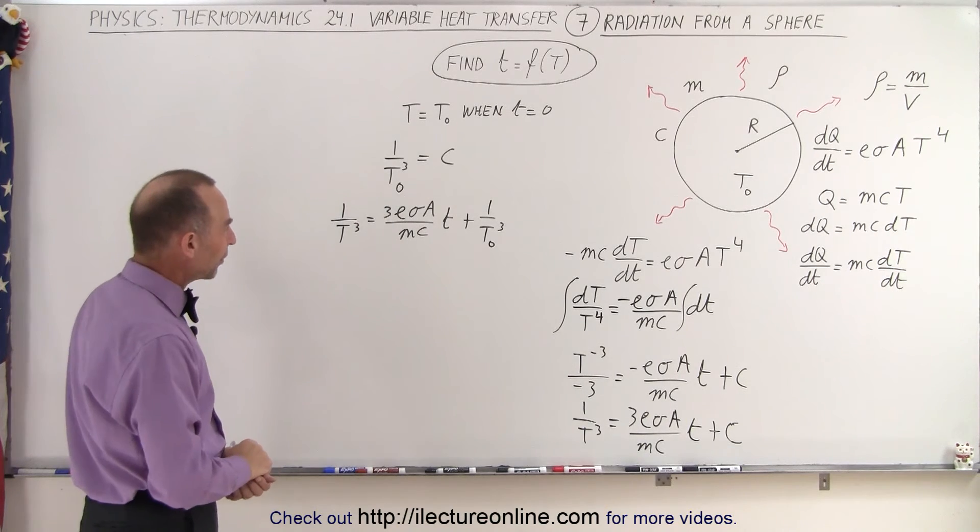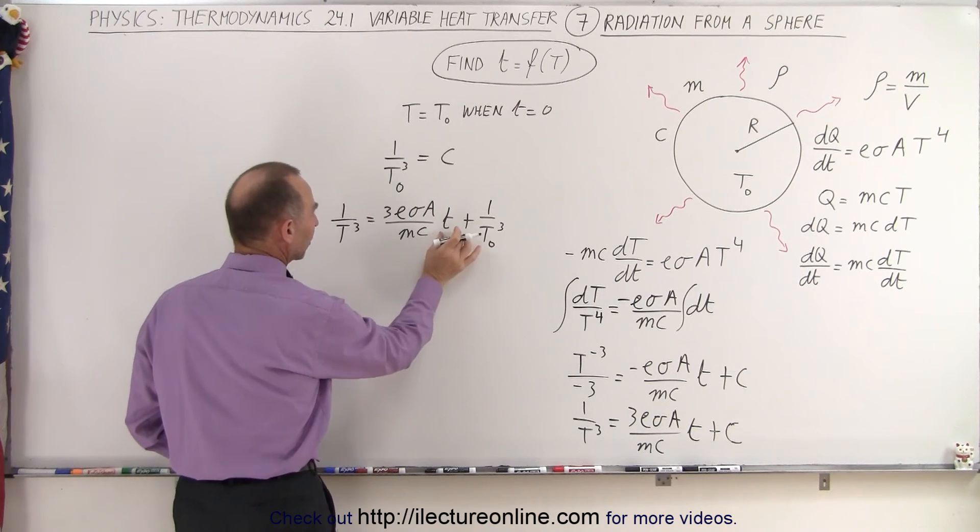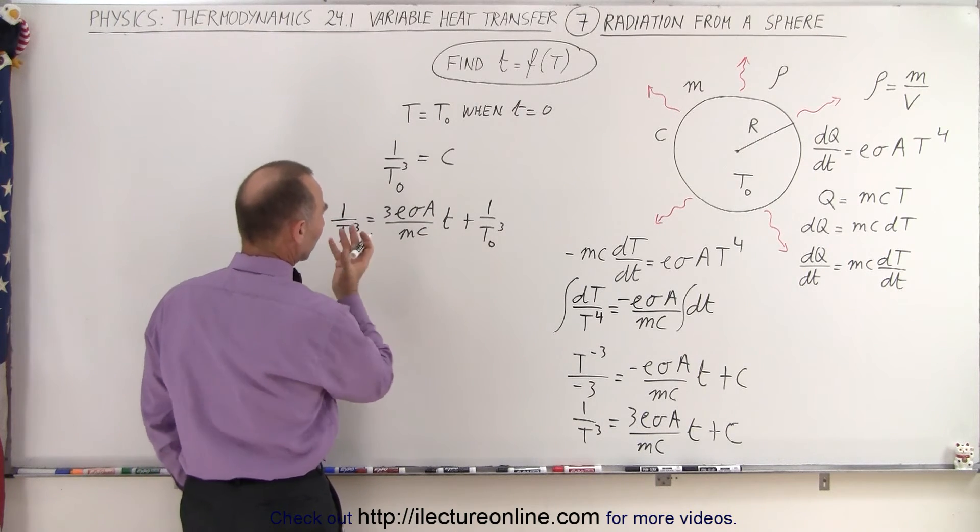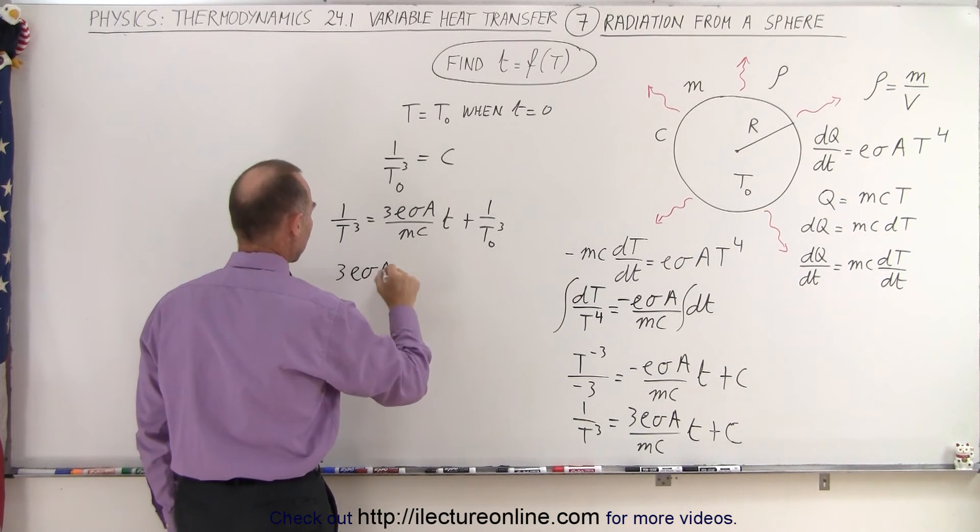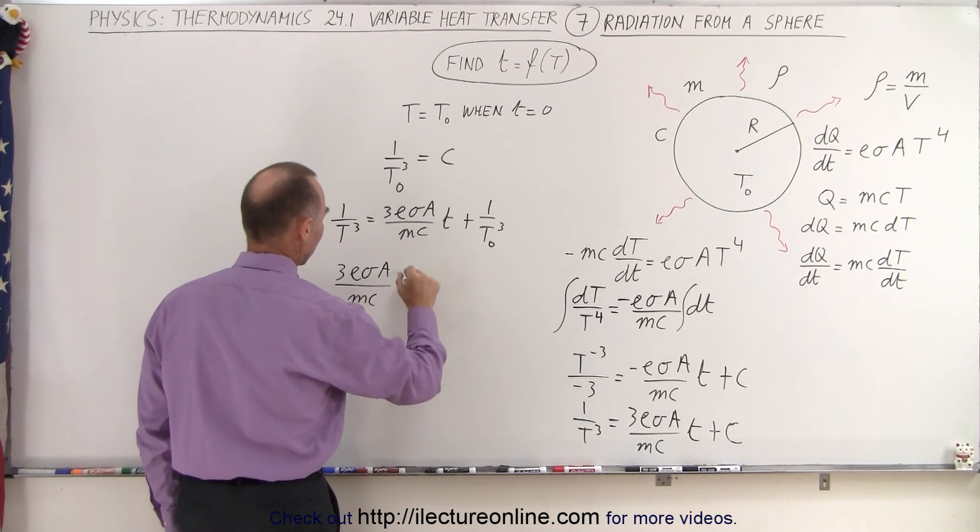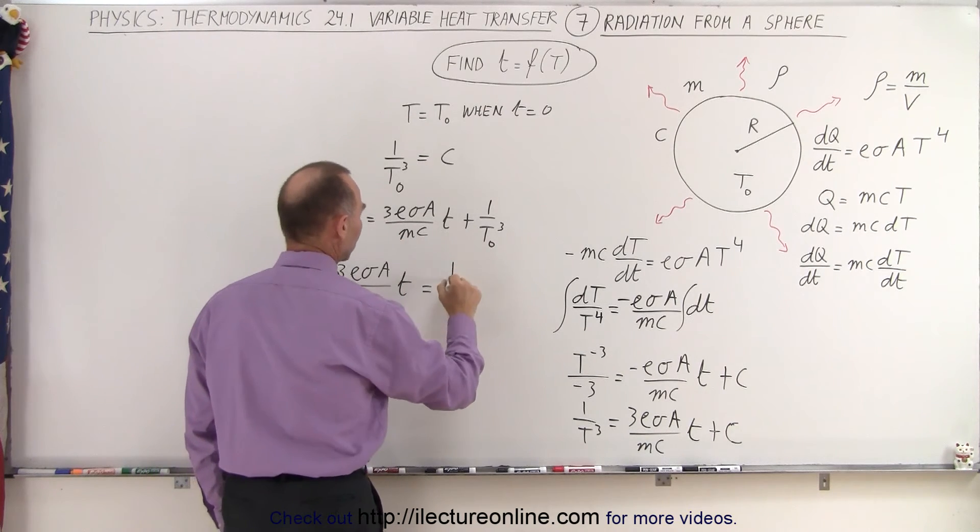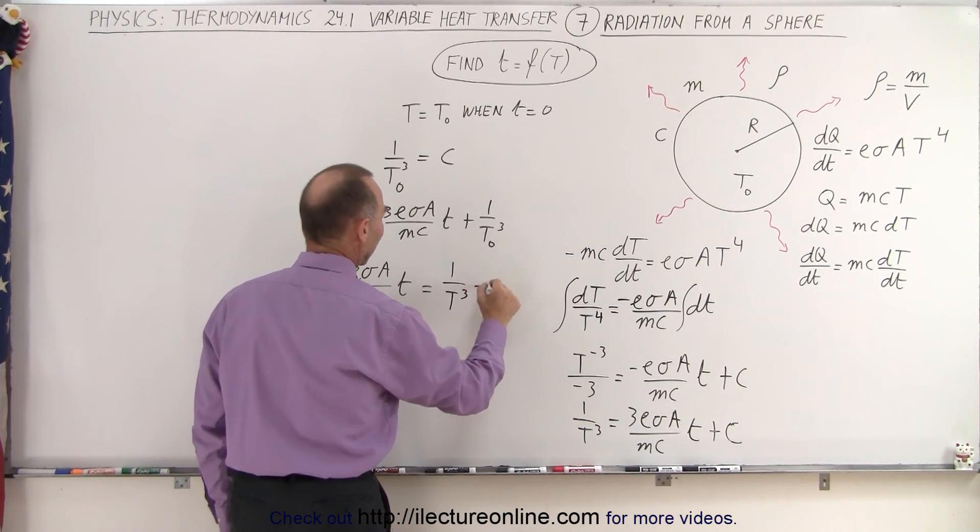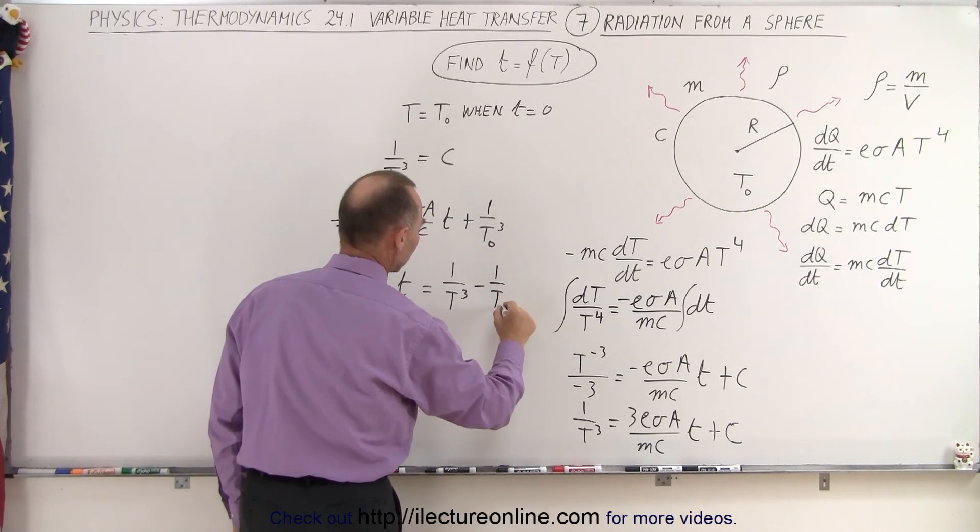And of course we need to separate the variable. So we're going to take this and bring it to the other side. We're going to solve this for T eventually. So we're going to turn the equation around. So we have three E sigma A over MC times T is equal to this which is one over T cubed minus when we bring this over the other side that would be minus one over T initial cubed.